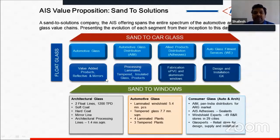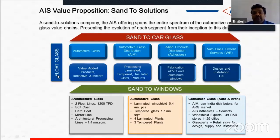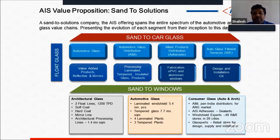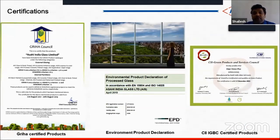The base glass for everything is float glass. In the automotive segment, the value chain extends from glass supply to OEM to treatment services. In architectural glass, AIS covers reflective glasses, mirrors, and extends to design and installation through their 'Glass Experts' service. They also manufacture their own AIS Windows product line.